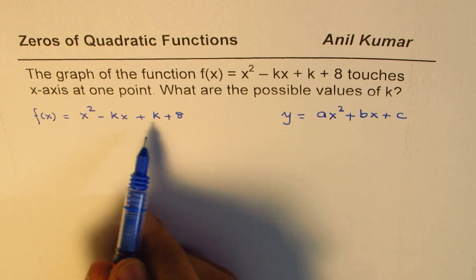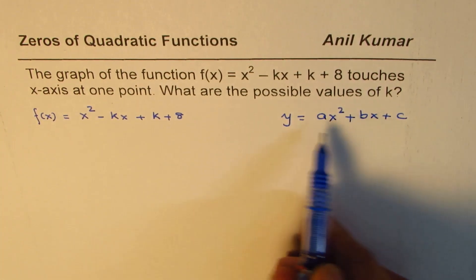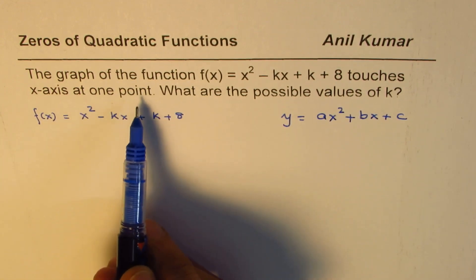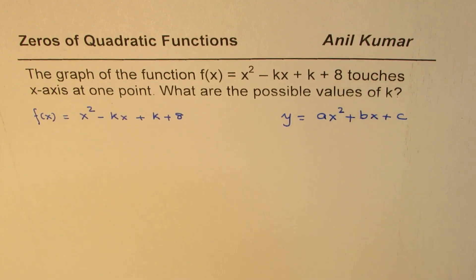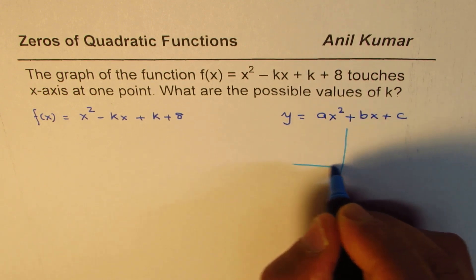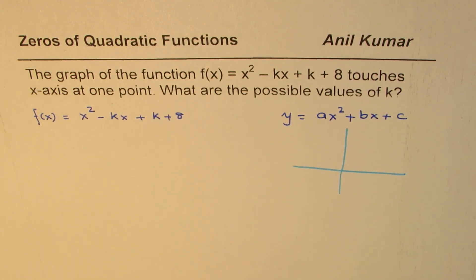a quadratic function as y equals ax squared plus bx plus c. The given function is a quadratic function like ax squared plus bx plus c. Now, it says touches x-axis at one point. So if the graph touches x-axis at one point, it means what? It means that the vertex is on the x-axis.